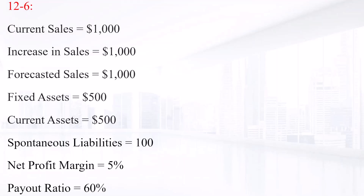Food's fixed assets were used to only 50% of capacity during 2010, but its current assets were at their proper level in relation to sales. All assets except fixed assets must increase at the same rate as sales. Fixed assets would also have to increase at the same rate if the current excess capacity did not exist. Food's after-tax profit margin is forecasted to be 5% and its payout ratio to be 60%. What is the additional funds needed for the coming year?